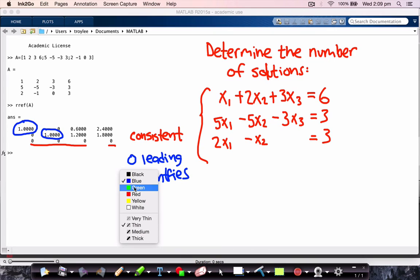So now we see if there's a free column. And we see that the third column is indeed free because it has no leading entries. So this is a free column.